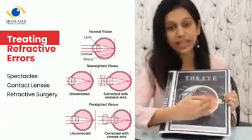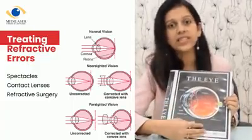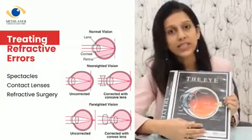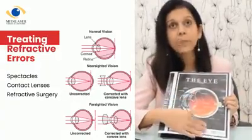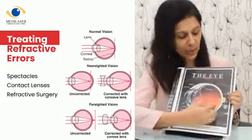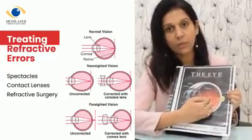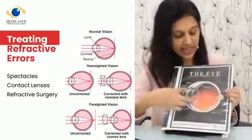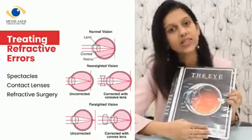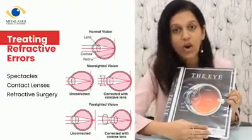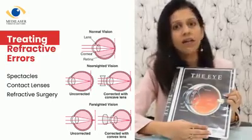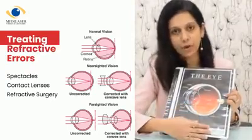Myopia, or short-sightedness, is the most common refractive error, wherein rays of light focus in front of the retina and a person needs a minus-powered glass. Without glasses, a myopic person can see everything up close but distance is a blur. The second kind of refractive error is when your eyeball is shorter than normal, and the rays of light focus behind the eye — that eye is called hypermetropic, or far-sighted. These people can see distance clearly but near vision is a problem.